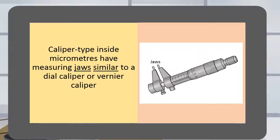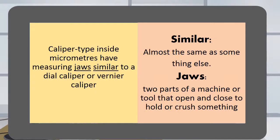Caliper type inside micrometers have measuring jaws similar to a dial caliper or vernier caliper. Similar means almost the same as something else.